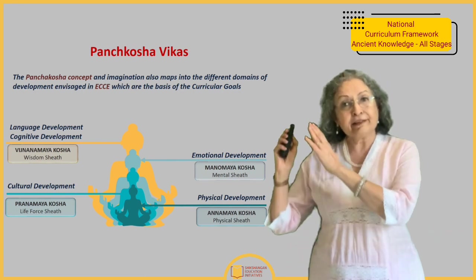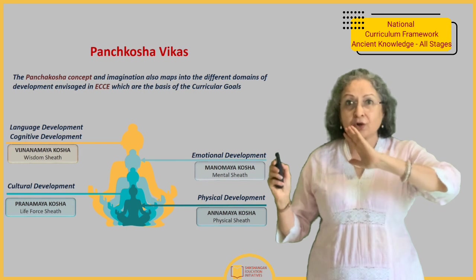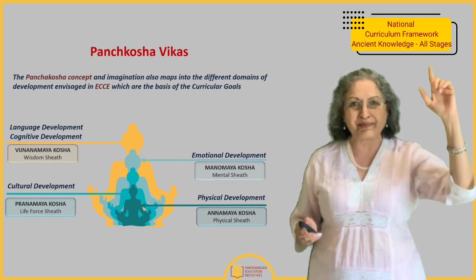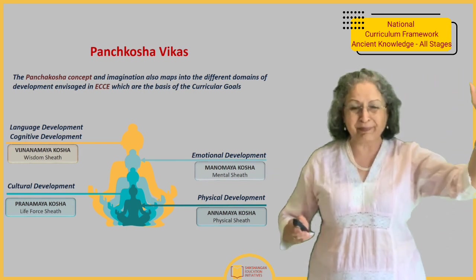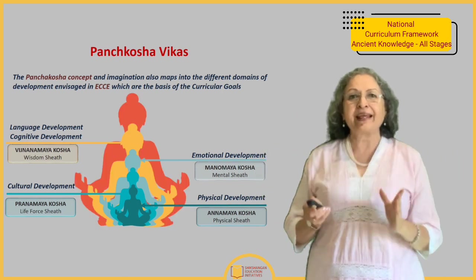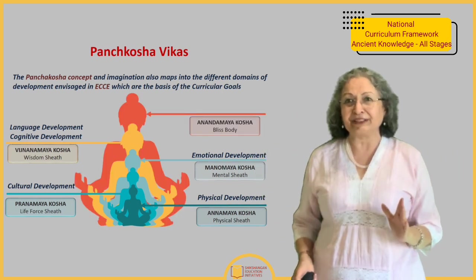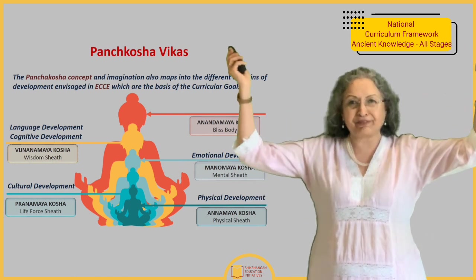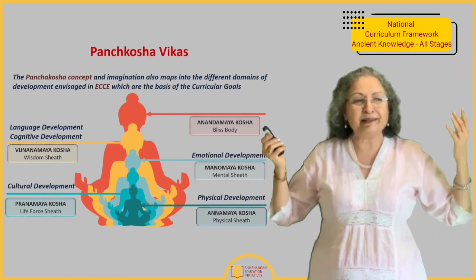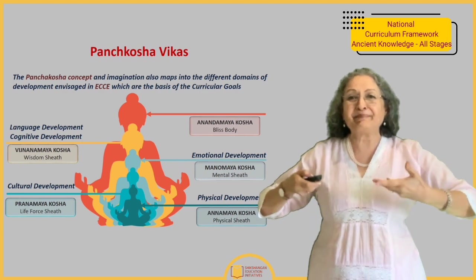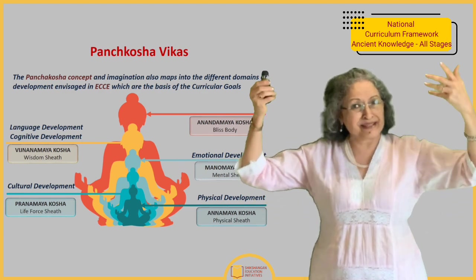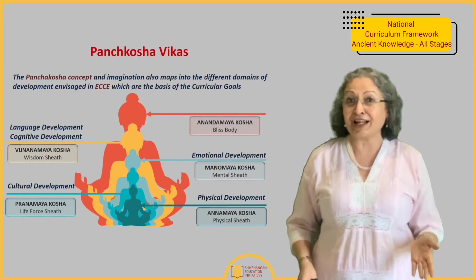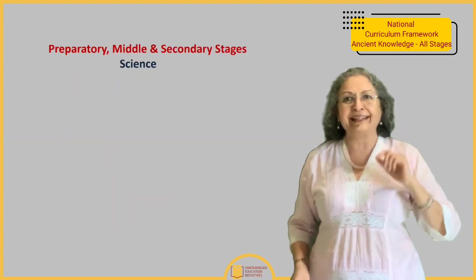It follows that there must be Vigyanamaya Kosha — the wisdom sheath — which is cognitive development. In the five domains, cognitive development is mentioned separately, covering science, math, language, and literacy development. Both of these squarely fit into Vigyanamaya Kosha. Finally, there is Anandamaya Kosha, which is the bliss of the body. These are the five Koshas mentioned in the national curriculum framework, especially in the early childhood education section.